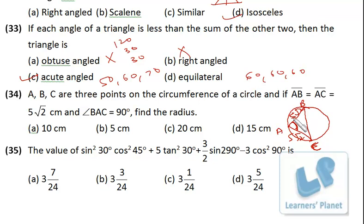So square of this is 25 into 2, 50 plus 50, 100. So this must be 10. So diameter must be 10. That means radius must be 5. So the only thing you must be knowing over here is the angle in semicircle is 90 degree.